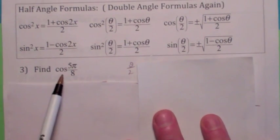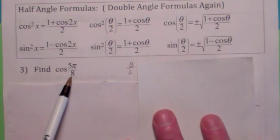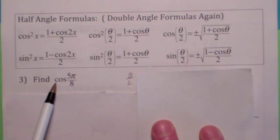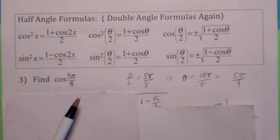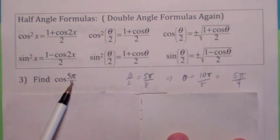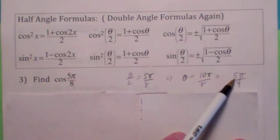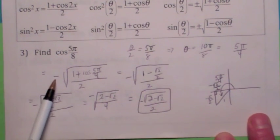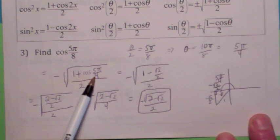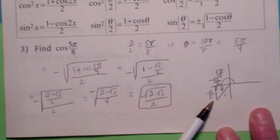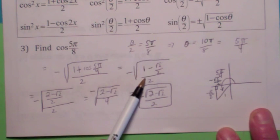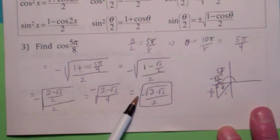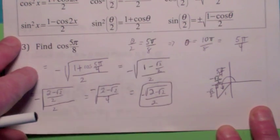For example, take cosine of 5 pi over 8. What quadrant are we in? 5 pi over 8 is in quadrant 2, so when you use the half angle formula for cosine, you need a negative sign because the angle is in quadrant 2. If half the angle is 5 pi over 8, then the whole angle is 5 pi over 4, which is a known angle. So you take the negative square root of 1 plus cosine of 5 pi over 4 all over 2. Cosine of 5 pi over 4 is in quadrant 3, so it equals negative radical 2 over 2. When you simplify, you get a common denominator and end up with negative the quantity radical 2 minus radical 2, all over 2.